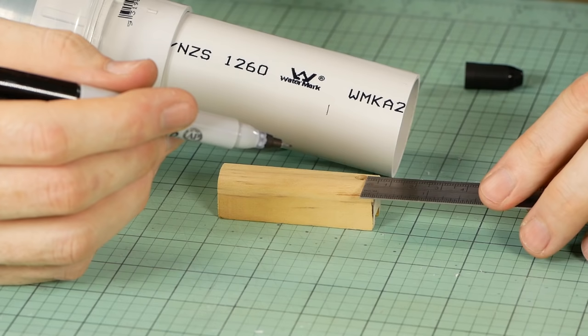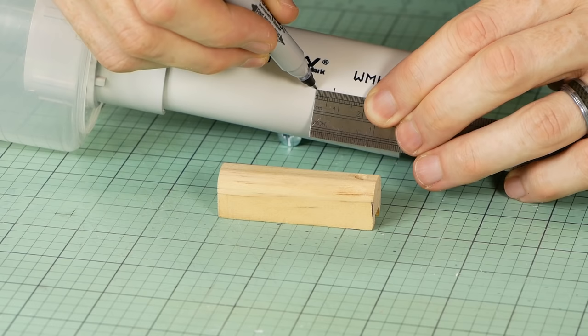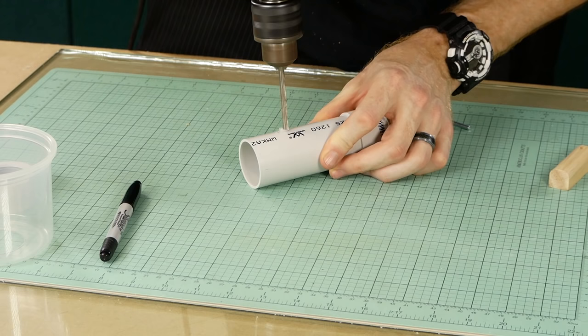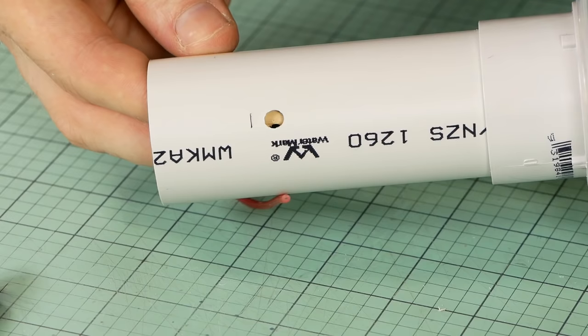Next, I measure from the top of the wood to the center of the hole, which is 7 millimeters, and then mark that on the PVC as well. This is where we need to drill our hole for the bolt to fit through.